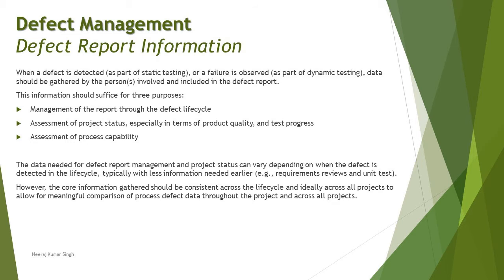Initially you may start logging a defect with limited mandatory details to get started, and then as the defect proceeds through the defect life cycle, you add more relevant details identified along the way. However, the core information gathered should be consistent across the life cycle, and ideally across all projects, to allow meaningful comparison of defect data. Having a common template across the organization between different projects to manage all defect reports is very crucial and recommended.